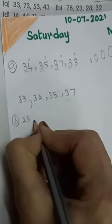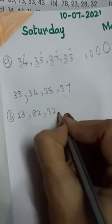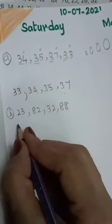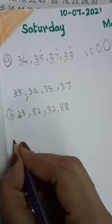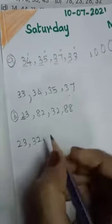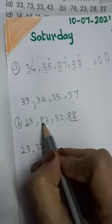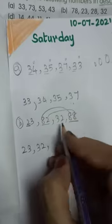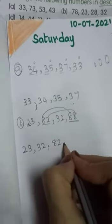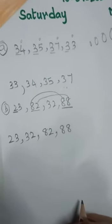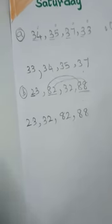Let's do one more: 23, 82, 32, and 88 — arrange from smaller to bigger. The smallest number is 23, then comes 32. Now we have 82 and 88; both tens digits are equal, so compare the ones place — 82 comes first, then 88. So the ascending order is: 23, 32, 82, 88. This is the way to arrange numbers in ascending order.